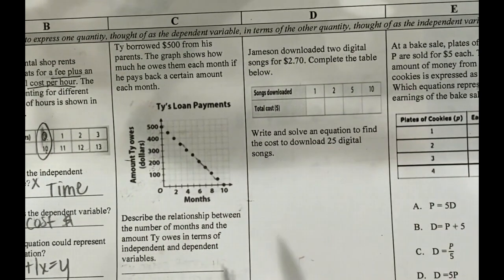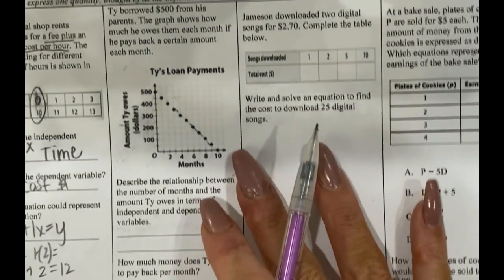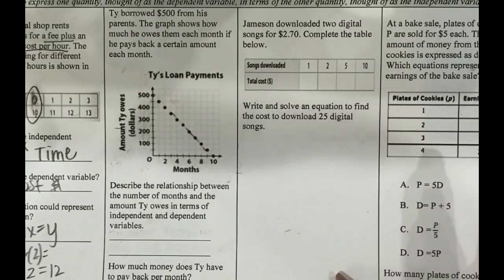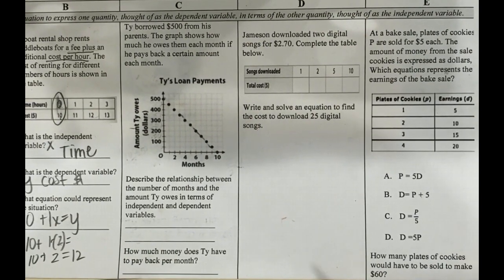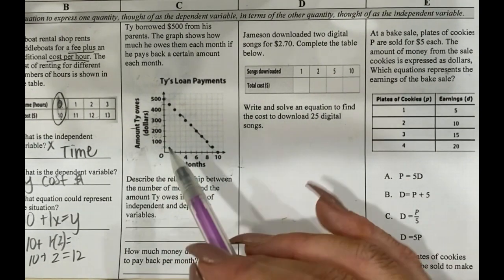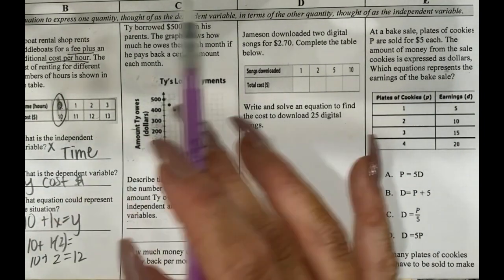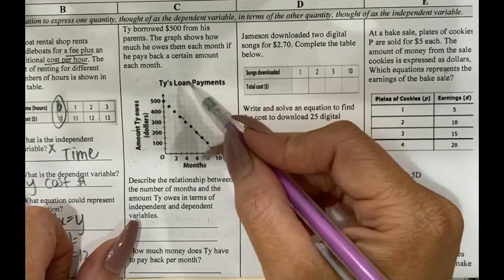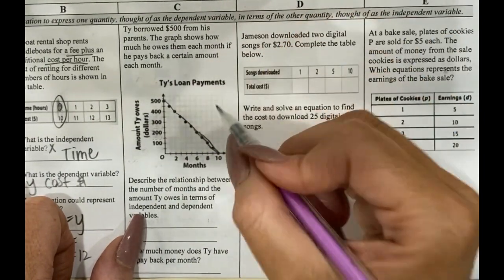Okay. So let's look at our next problem. It says Ty borrowed $500 from his parents. The graph shows how much he owes them each month if he pays back a certain amount each month. Okay. So before I even go down here to my questions, let's make this kind of bigger. I'm going to do the same thing that I did with the first graph. I'm going to do it here because I can't really answer questions until I understand what's going on with the graph.